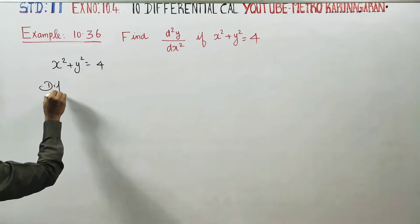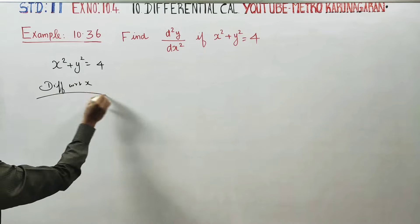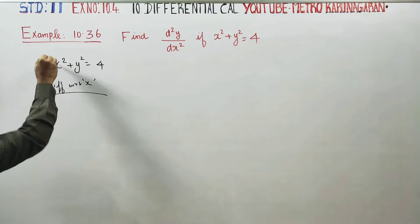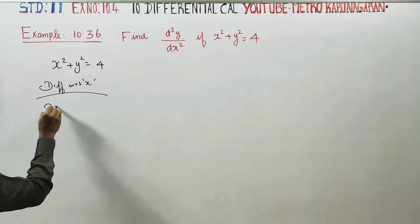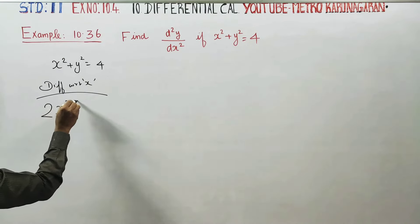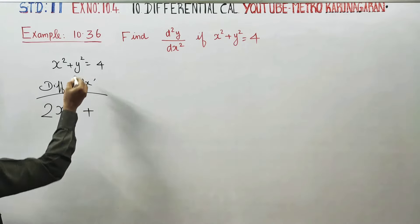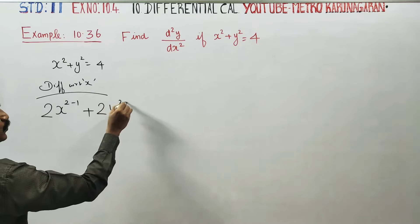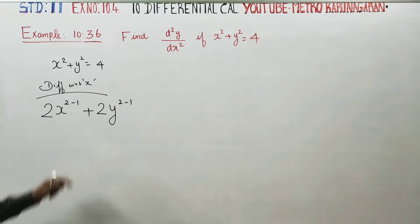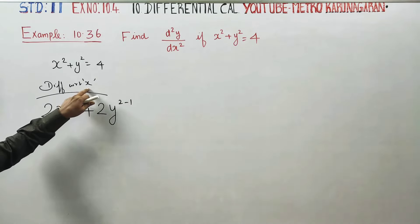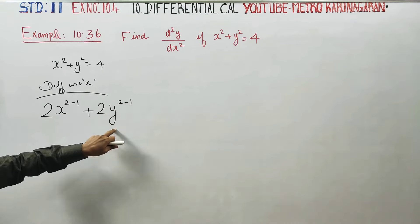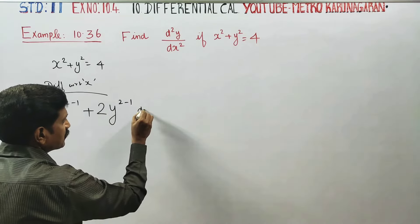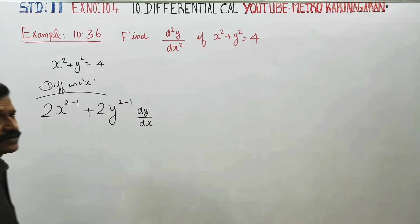Differentiating with respect to x: x² differentiated gives 2x, and y² differentiated gives 2y. Since y is a function of x, when differentiating a y term, you have to add the term dy/dx by the chain rule.